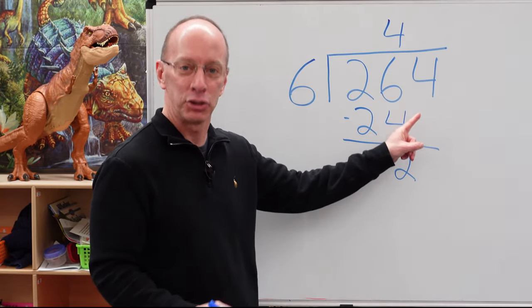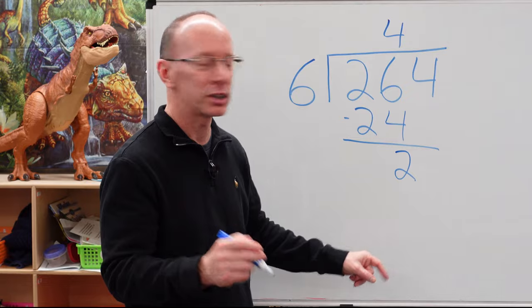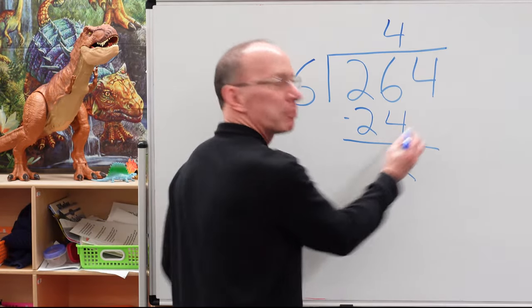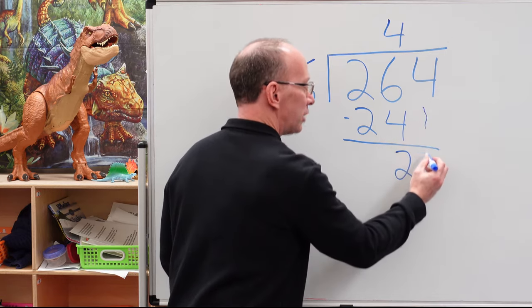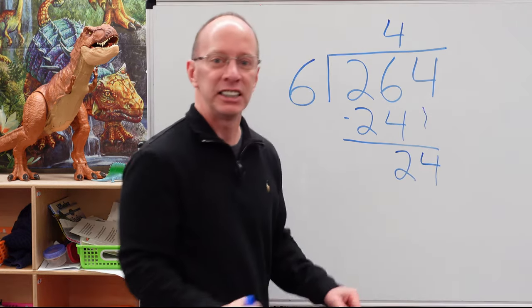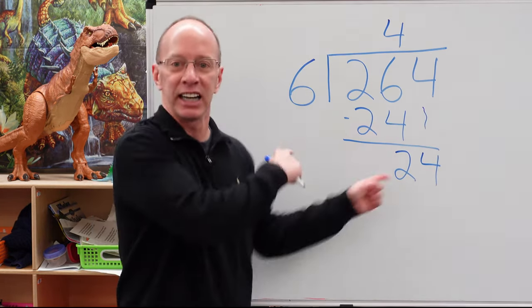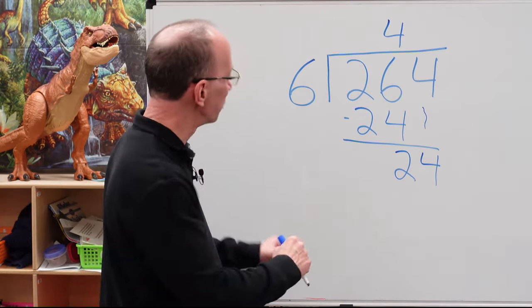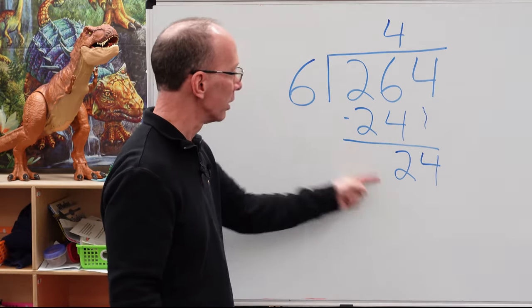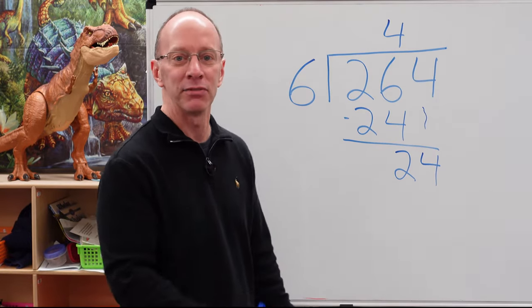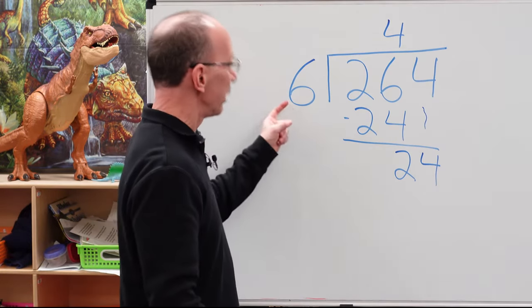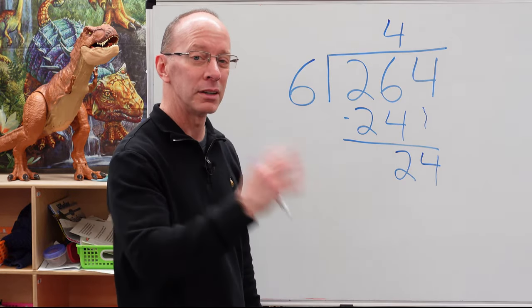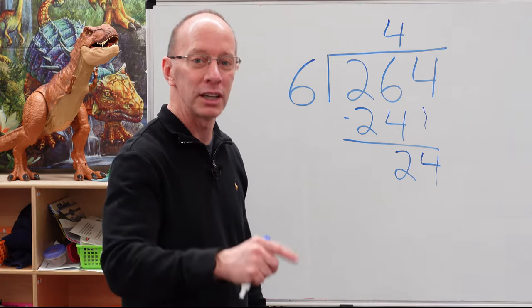Drop that next number down. Drop it down. If you want to do a little beatboxing, you can do that. Drop it down. Drop the four down. Why doesn't he just stop singing and just get on with the math? I don't know. We got to be excited about math. Yes, we do. Now we have 24. I got beatboxing. I forgot where I was doing here. How many times can I put six into 24? Four times.